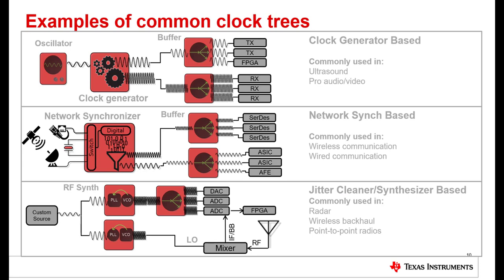Let's discuss some common clock trees that we see commonly used in different markets. Clock generator-based trees are common when the input source is sufficiently low noise, do not require cleaning, and there are no network synchronization needs. When synchronization is required, a network synchronizer-based clock tree is used. Jitter cleaners are used when the input clock jitter is too high and needs to be cleaned. Synthesizer-based trees tend to have fewer outputs that are higher frequency.